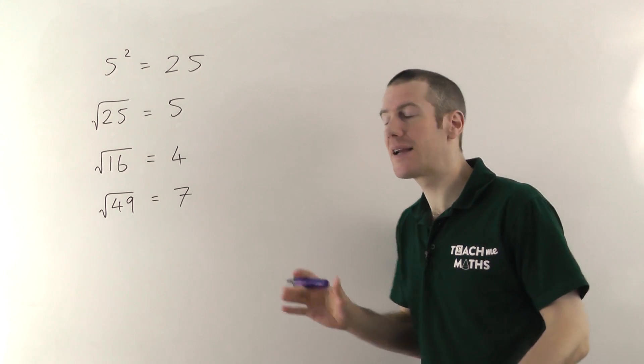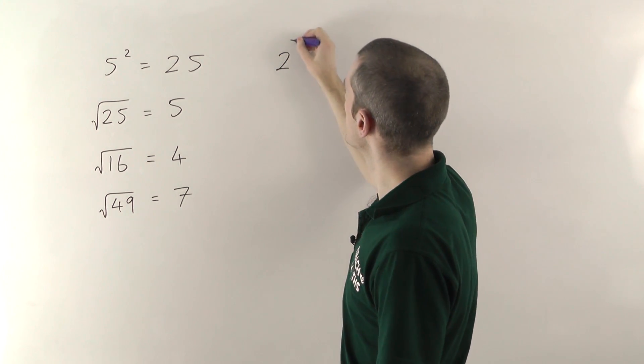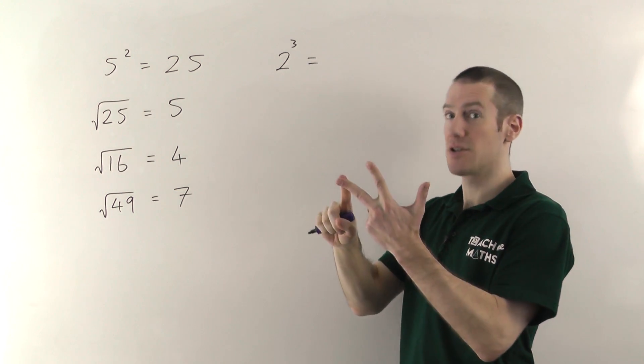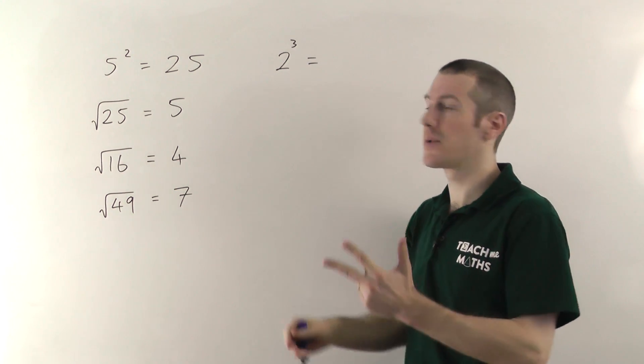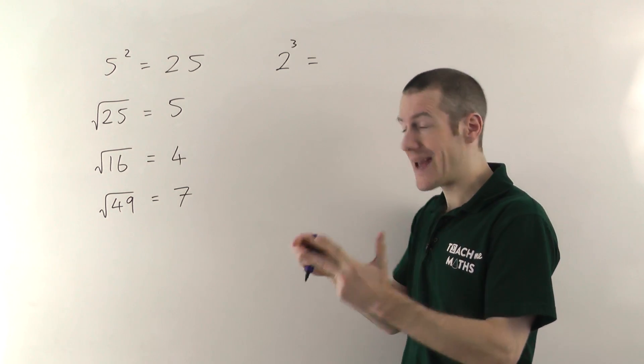Cube roots are slightly harder. Again if we start with a cube, if you have 2³, that means 2 times 2 times another 2. You've got three 2's all multiplying each other. Well 2 times 2 is 4 times that by another 2 and you get 8.